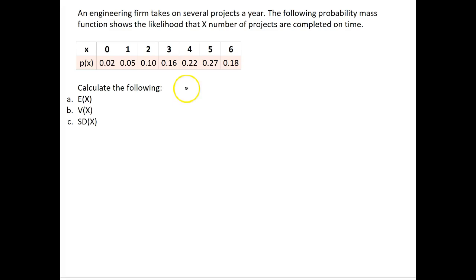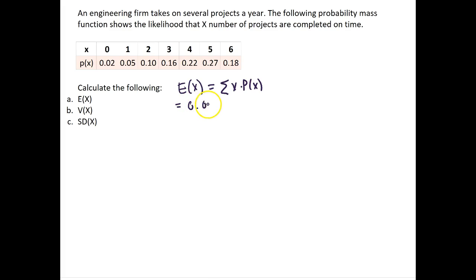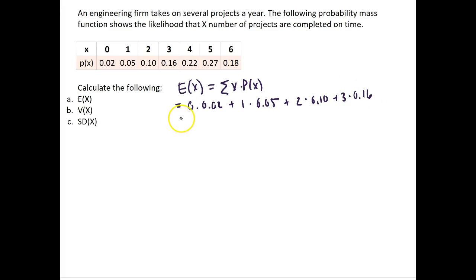For the expected value, the expectation of x is going to be equal to the summation of each value of x times the probability of x. So in this case, this is equal to 0 times 0.02 plus 1 times 0.05 plus 2 times 0.10 plus 3 times its probability of 0.16 plus 4 times 0.22 plus 5 times 0.27 and lastly plus 6 times 0.18.